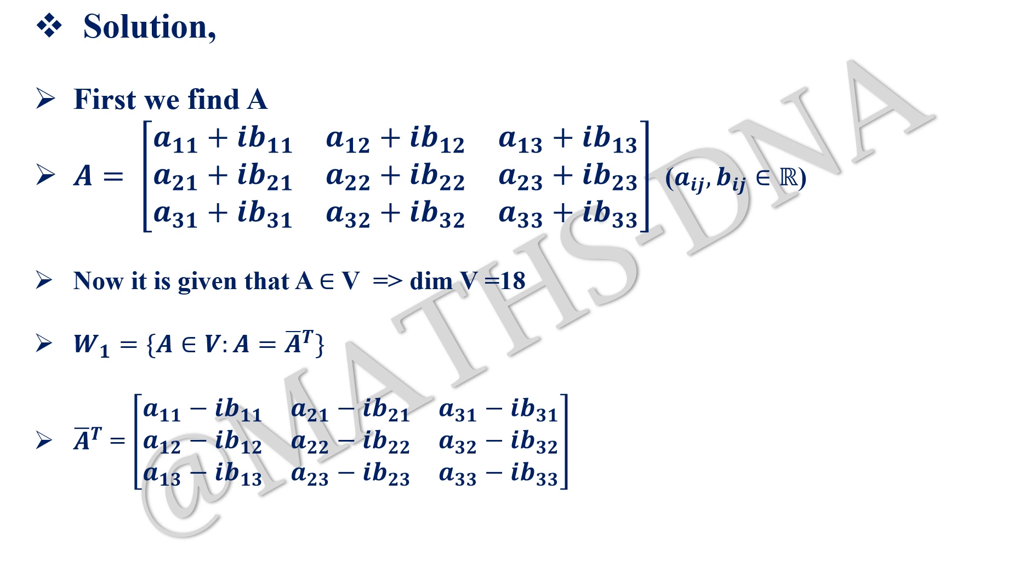They do not take the transpose and hence they end up with the wrong answers. So be very precise whenever you are solving a question what information is given to you. So A conjugate transpose will be a₁₁ - ib₁₁, a₁₂ - ib₁₂, a₁₃ - ib₁₃ up to a₃₃ - ib₃₃.